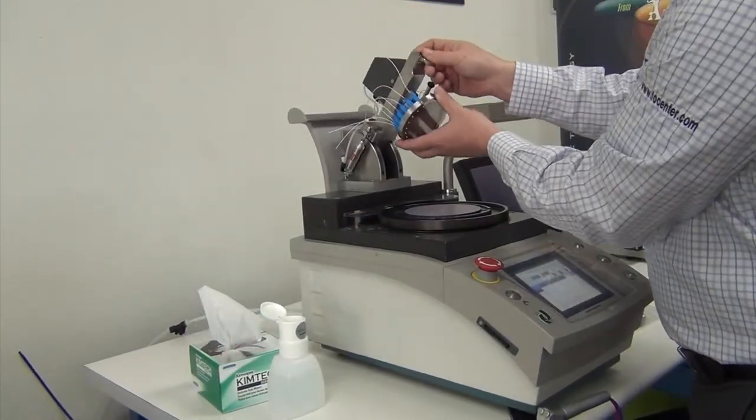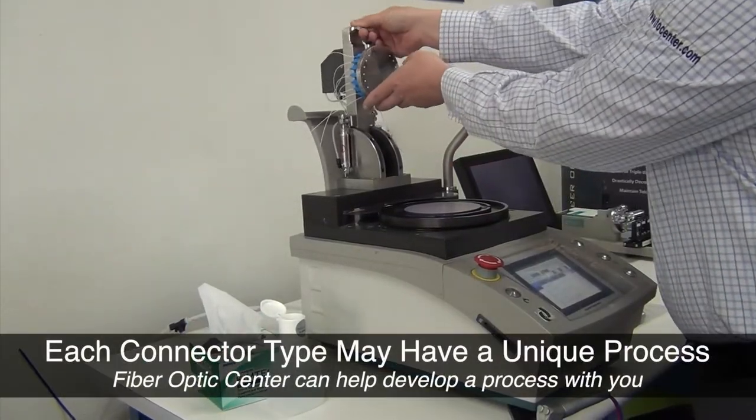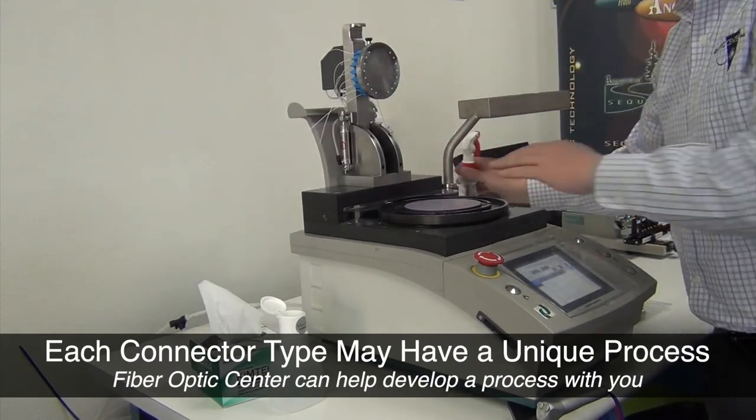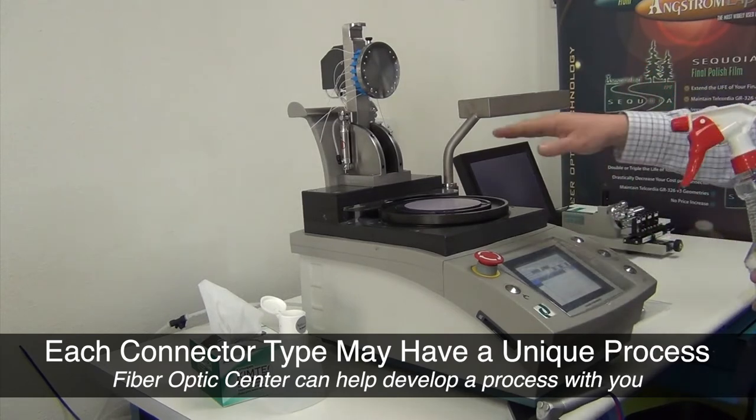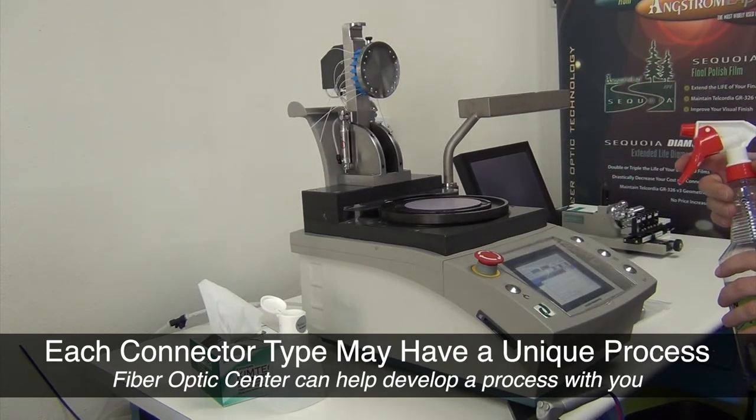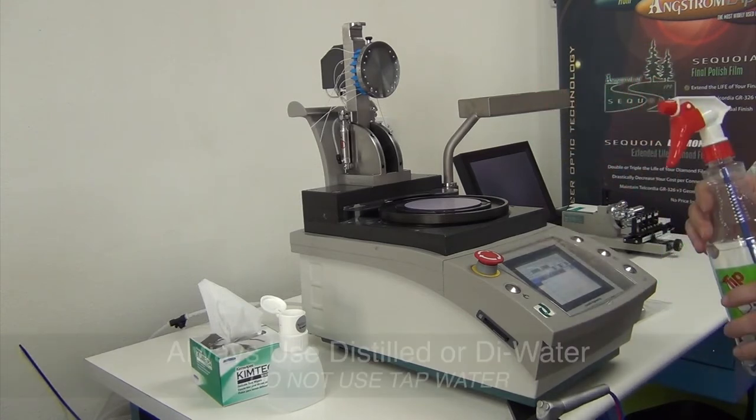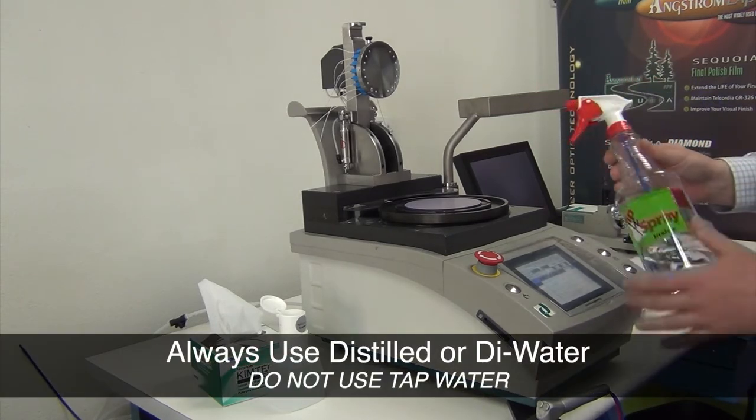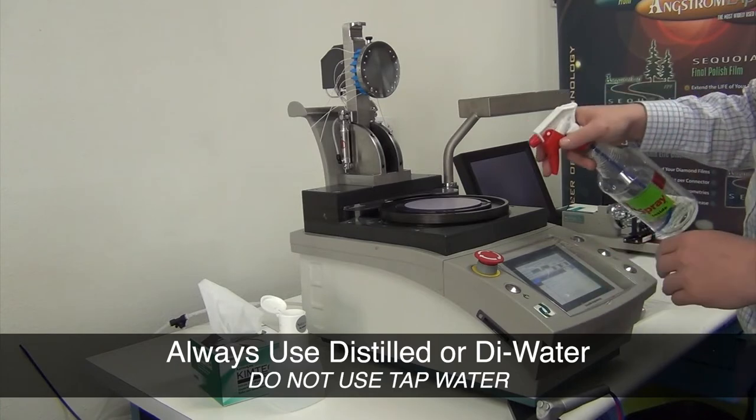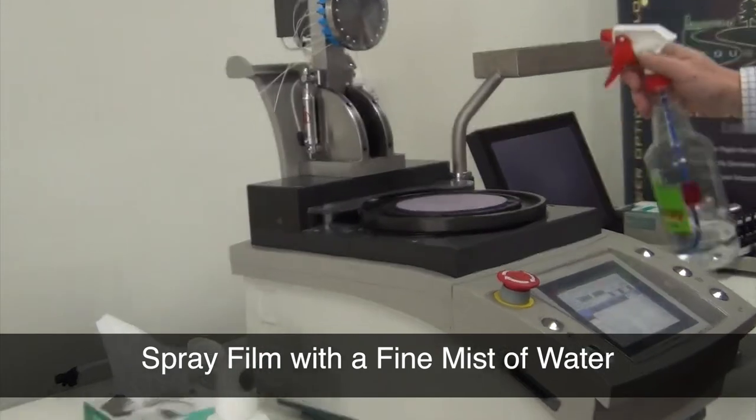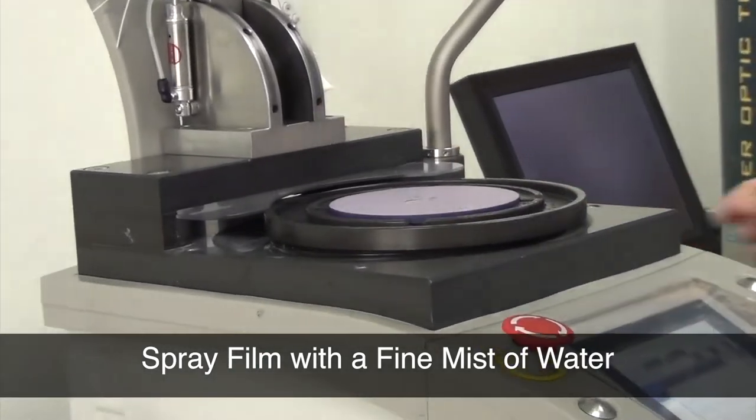The connectors have already been loaded. Next, lubricate the film with DI water. DI water maintains a higher level of cleanliness. Don't use tap water or bottled water or something that has a lot of minerals or contaminants in it. Create a fine mist on the film. This is the same application procedure and amount of water for each step in the process.